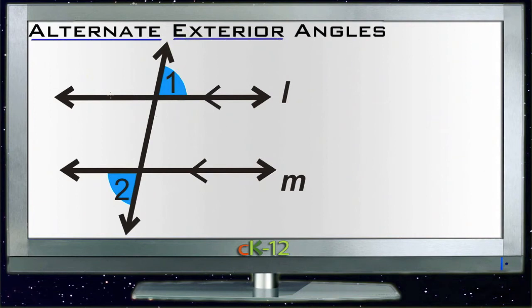So again, if we think of those two parallel lines as sort of bounding a rectangle, then the four angles here, here, here, and here that are on the outside of the shape are all exterior angles.